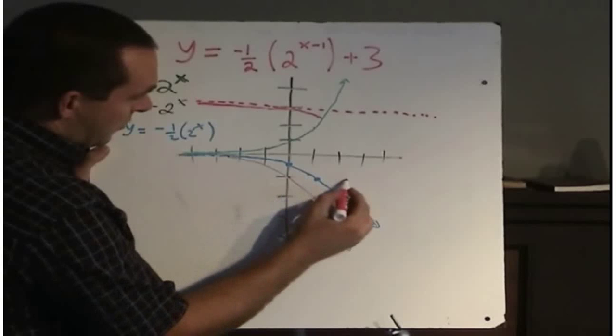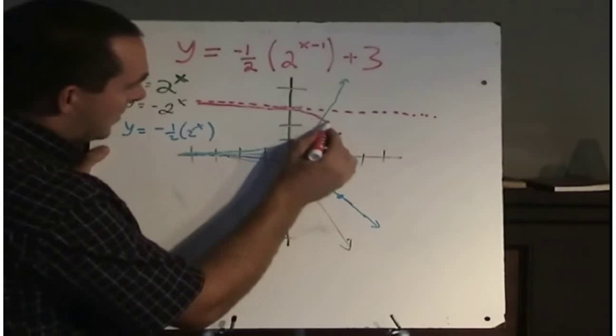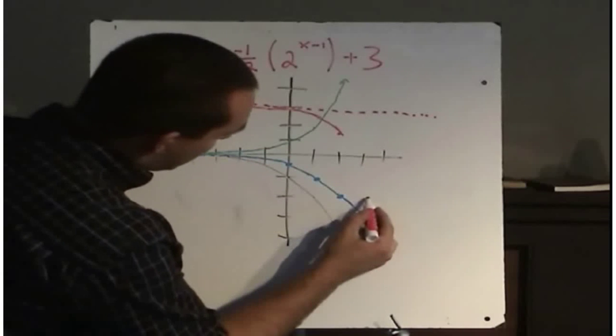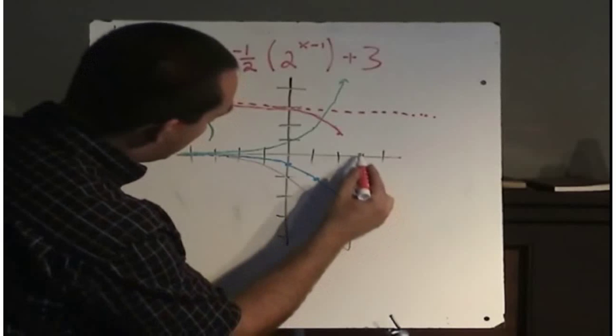Moving this point right 1 and up 1, 2, 3. And moving this point right 1 and up 1, 2, 3.